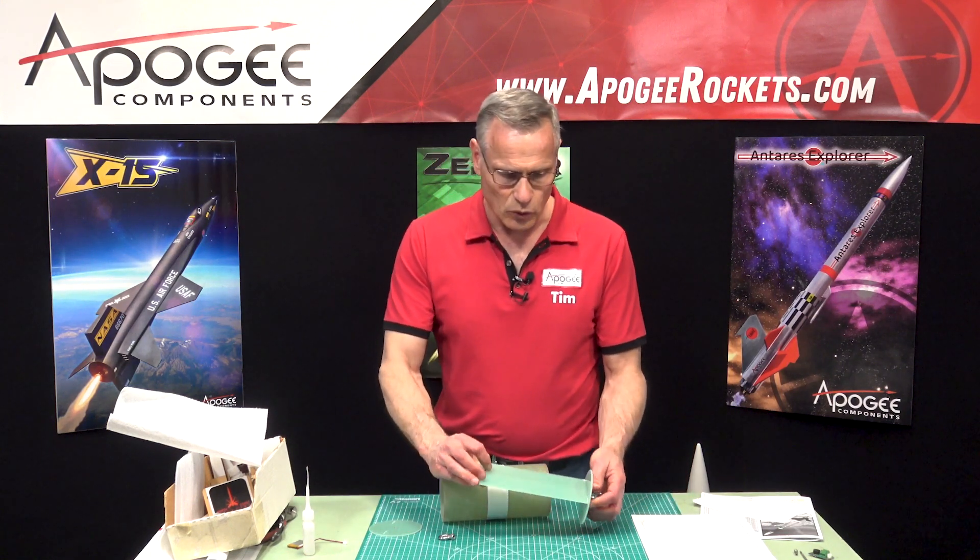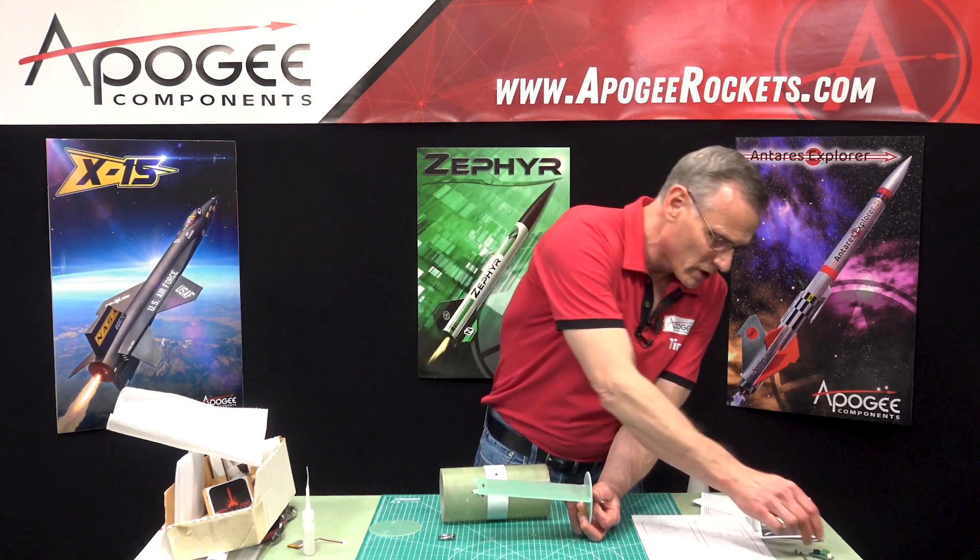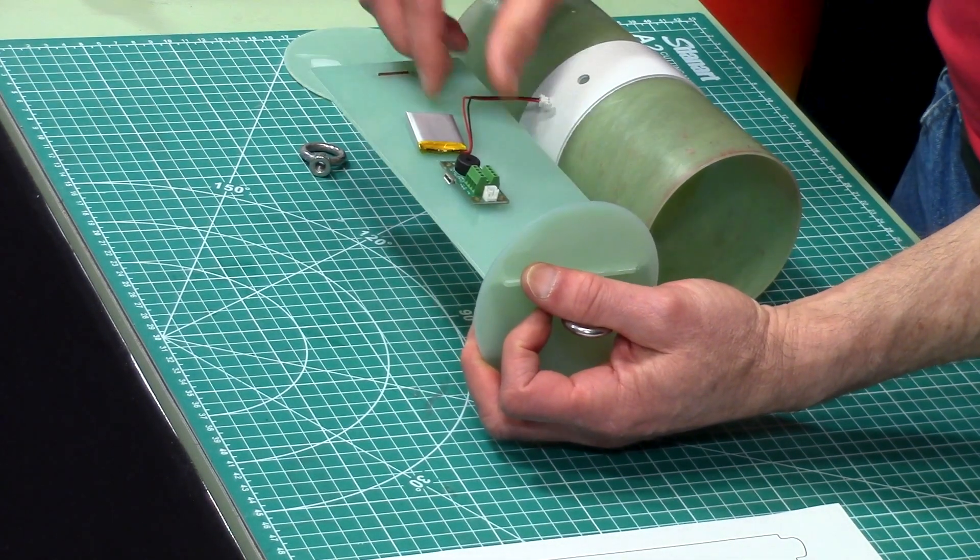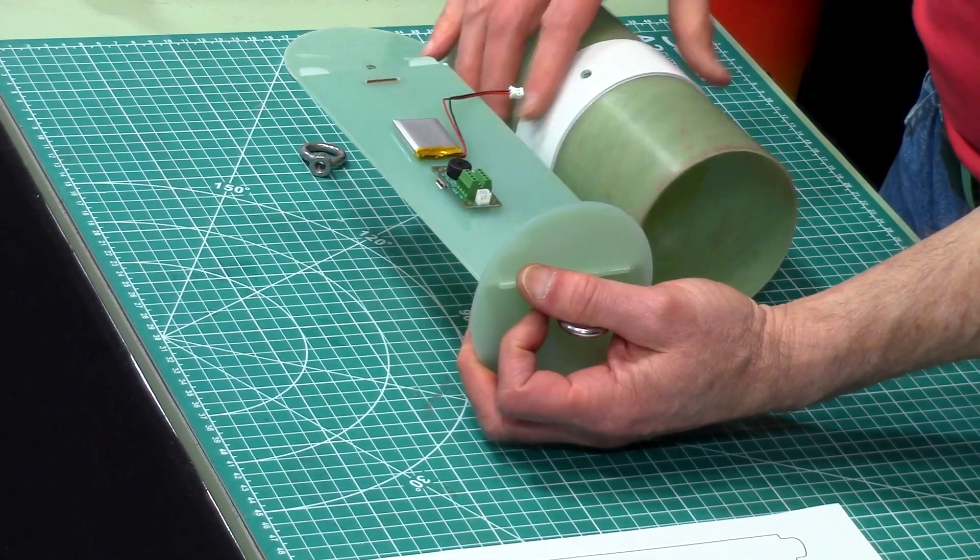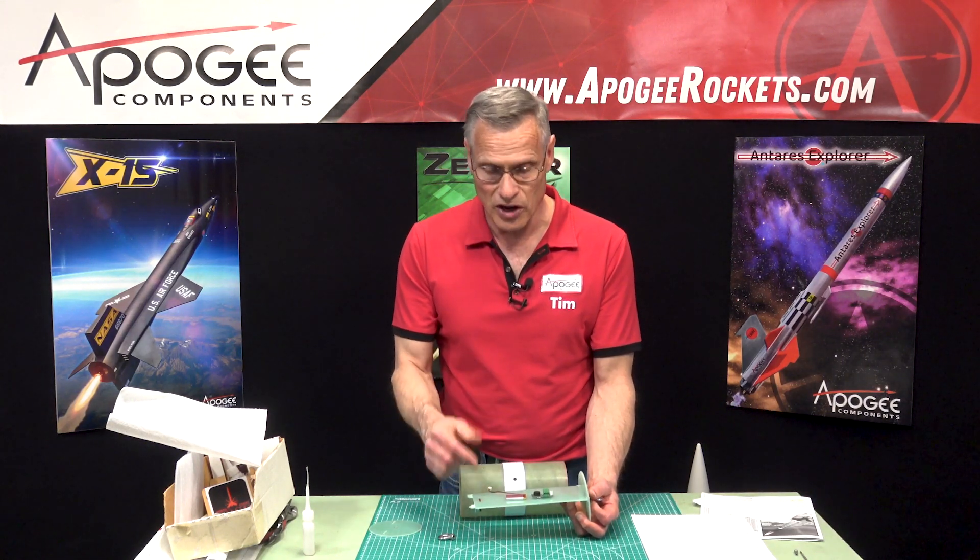Okay, so we are now ready to start installing our electronics on the board. I've got a little altimeter and a battery and some wires and switch, and I'll start doing that in the next video.